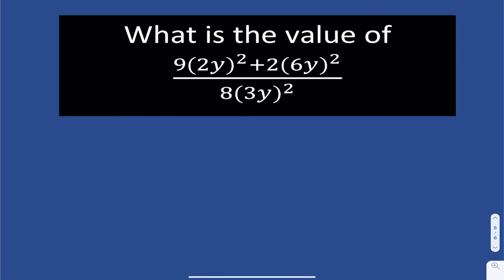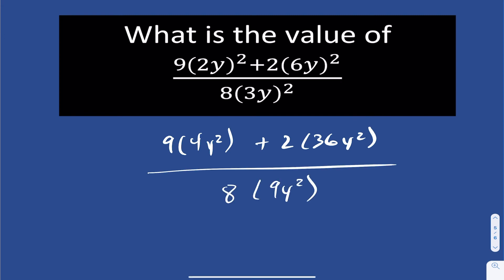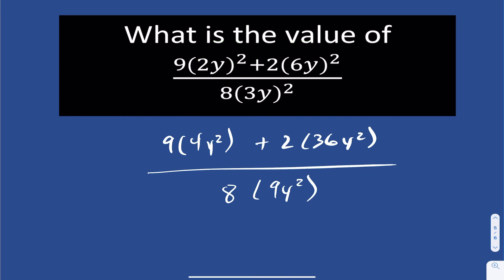Looking at the final problem, they want you to find the value of this expression. First, expand 2y squared: 2 squared is 4, so you get 4y squared. This becomes 36y squared divided by 8 times 9y squared. Note that the power of 2 only applies to what's in the brackets — you're not squaring the 9, the 2, or the 8; you're only squaring what is inside the brackets.